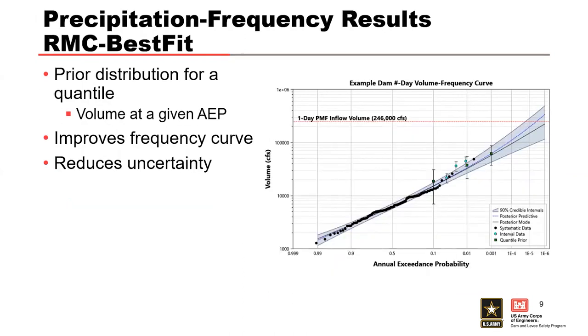The results of the precipitation frequency modeling informs our prior distribution of the volume at a specific quantile value that is used in our best fit analysis. That's our goal, is to inform the flow range at a quantile, at an AEP. Conceptually, a quantile prior tells the model that the frequency curve should pass through the range of our volume estimates from the precipitation frequency analysis. In other words, we're telling the model that we know something about the volume at a given AEP. So, we have a good feel for what that range is. The quantile prior is considered in combination with the at-site observed information and regional skew.